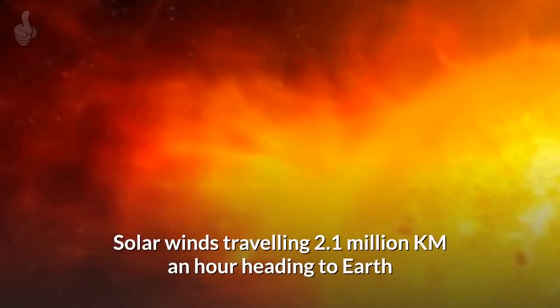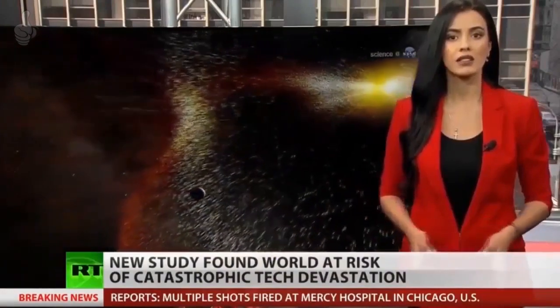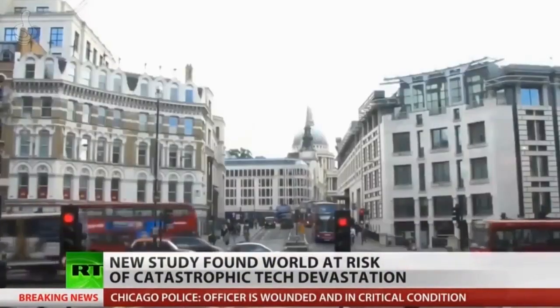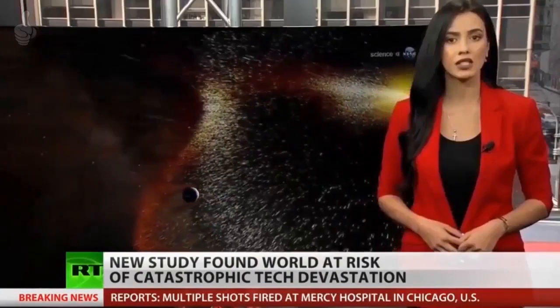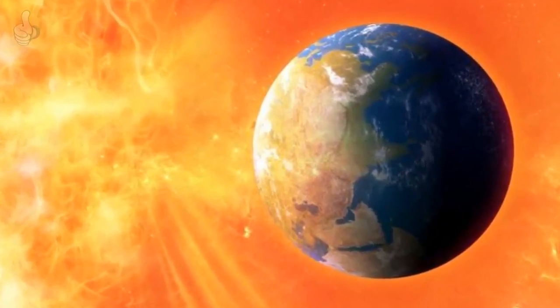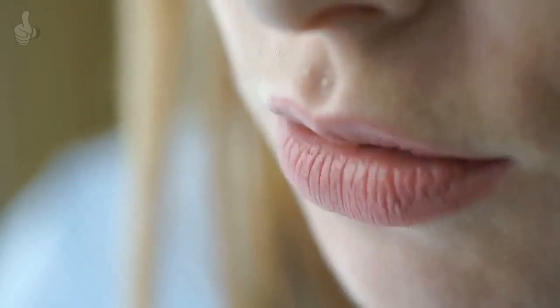Solar winds traveling 2.1 million km an hour heading to Earth. Today we got interesting news that solar winds fly 2.1 million km per hour heading to Earth. Is it dangerous to our planet? Is this the end of everything on Earth? Let's talk about it in this video.